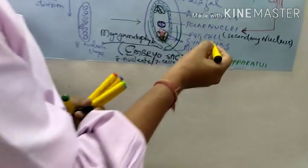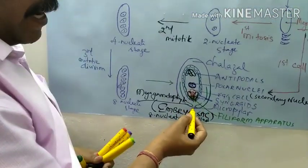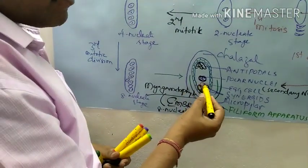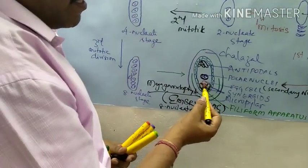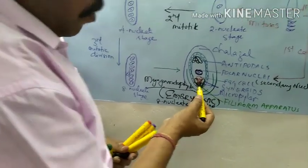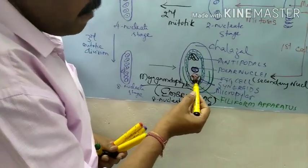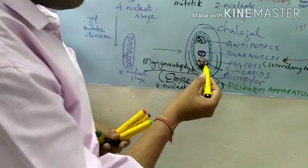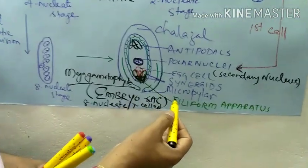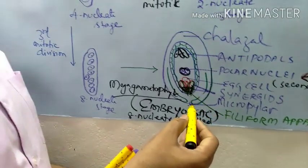They fuse later on and form a single cell. And towards the micropylar end we have 3 cells — the central cell is called the egg cell, flanked by the 2 cells called synergids. At the base of the synergids we have what is called the filiform apparatus — the finger-like projections. This whole thing is called the embryo sac.